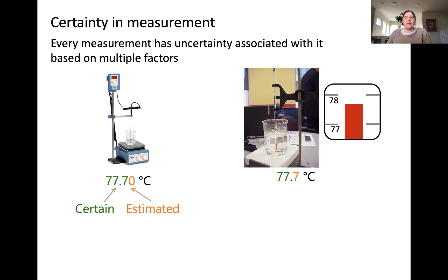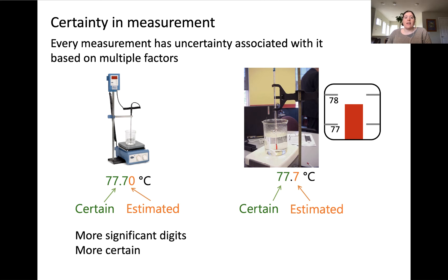The reason for this can become clearer when looking at the example of the glass thermometer. When looking at the measurement shown in the red bar on the right of this picture, you'll notice the measurement is between 77 and 78 degrees Celsius. The actual value could vary depending on who you ask — somebody might say 77.6 degrees Celsius, or somebody else might say 77.7 degrees Celsius. This is why the first two digits are certain; we know for certain the temperature is at least 77 degrees Celsius. However, the last digit is estimated — it could be a 7, a 6, a 5, or an 8, depending on who you ask.